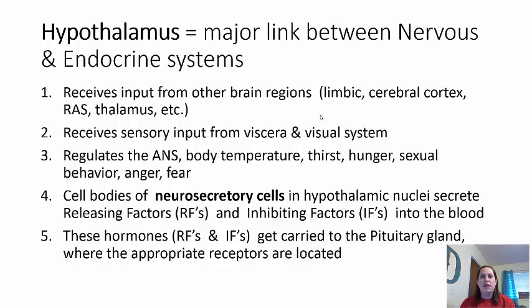With our continuation of Chapter 18, I want to start with the hypothalamus and move down, talking about each of the different hormones and which endocrine glands they come from. The hypothalamus is the connection between the nervous system and the endocrine system. It receives information from pretty much every region of the brain: the limbic system, the cerebral cortex, the RAS, and the thalamus.